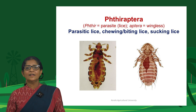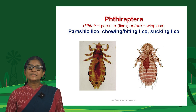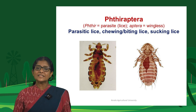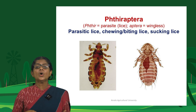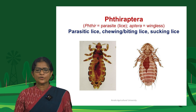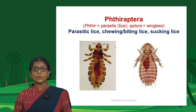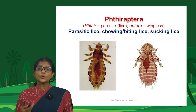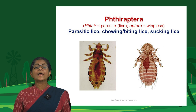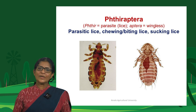Phthiraptera are secondarily wingless insects including parasitic lice — both chewing lice and sucking lice. The word Phthiraptera comes from 'phthir' (parasite/lice) and 'aptera' (wingless). They include parasites of humans such as the human head louse, and bird lice that are ectoparasites on chickens and poultry.